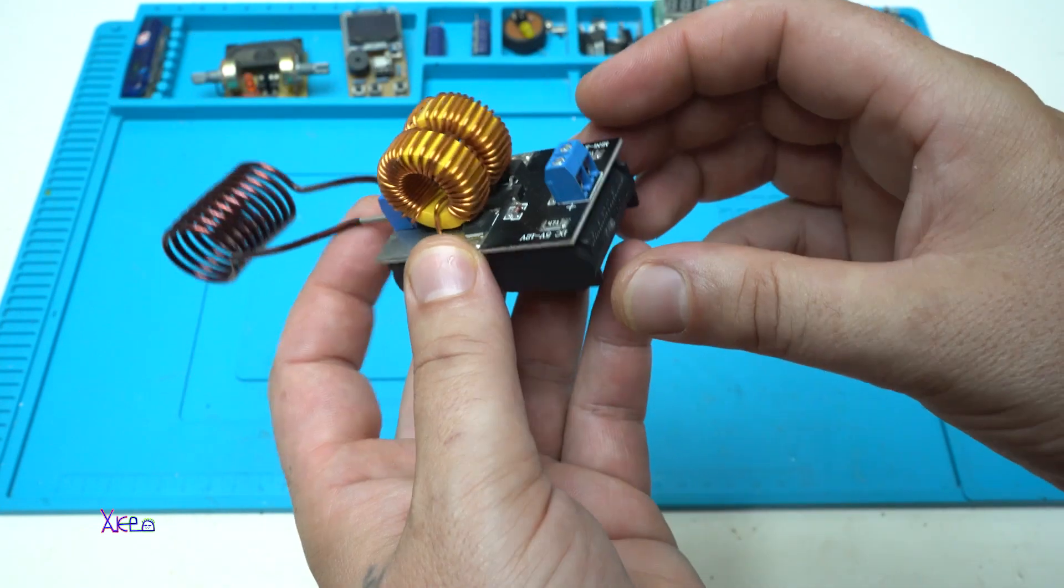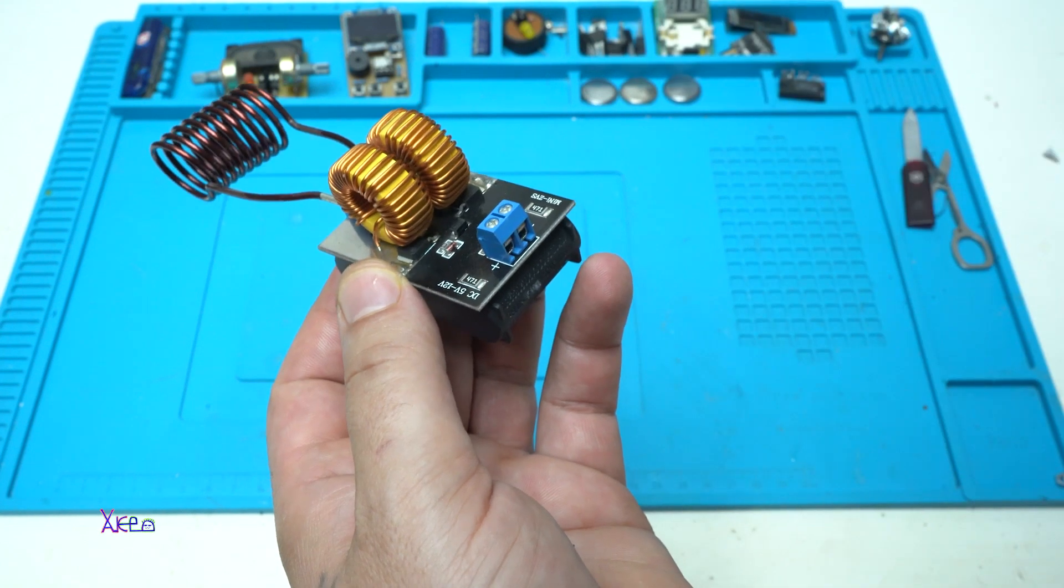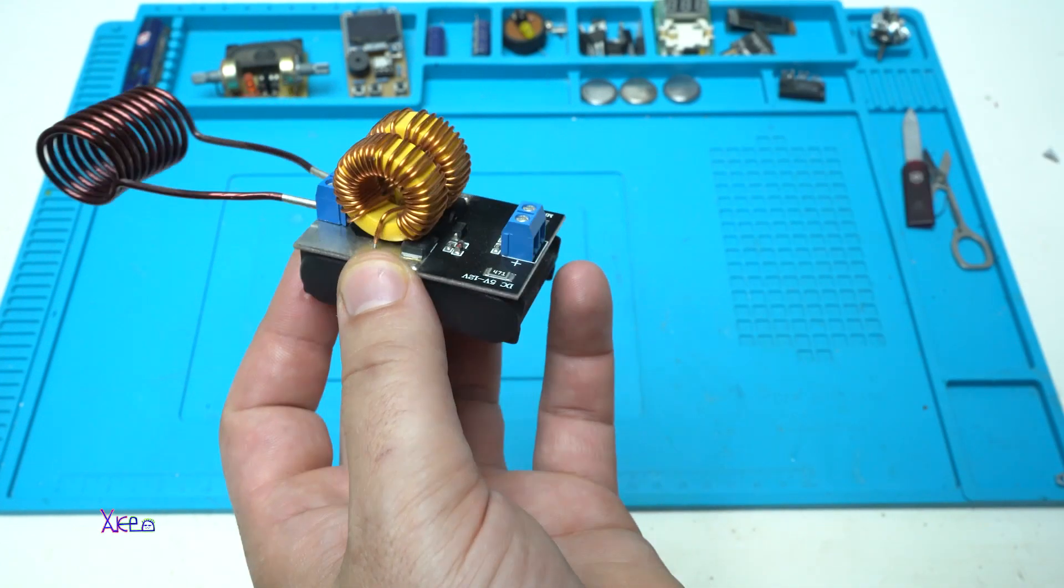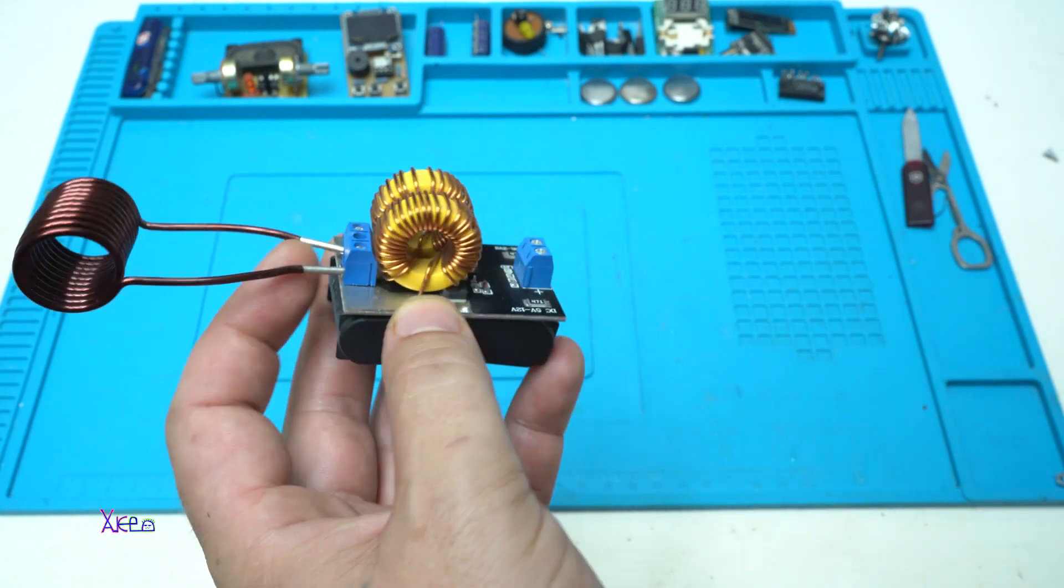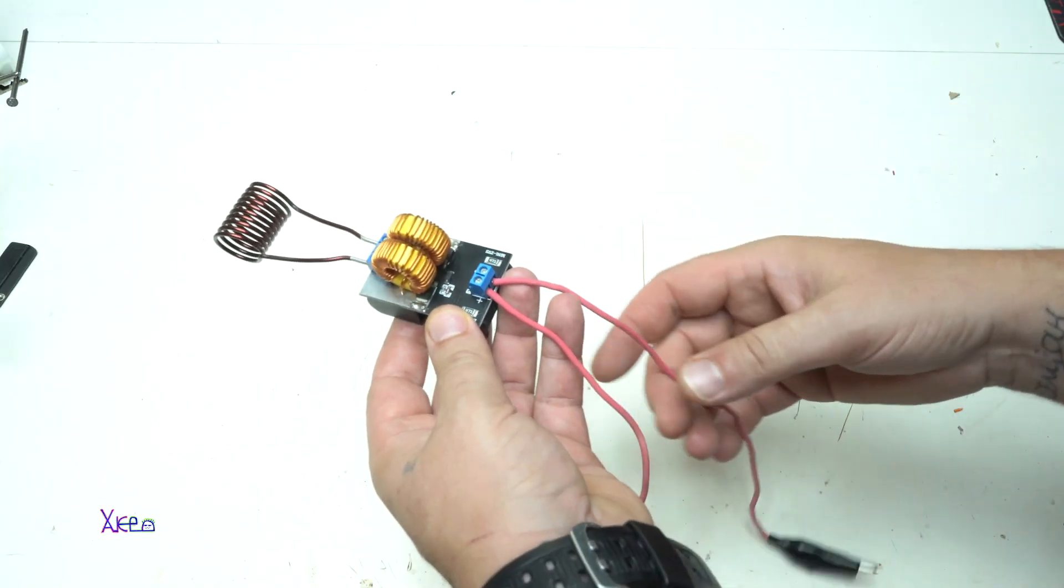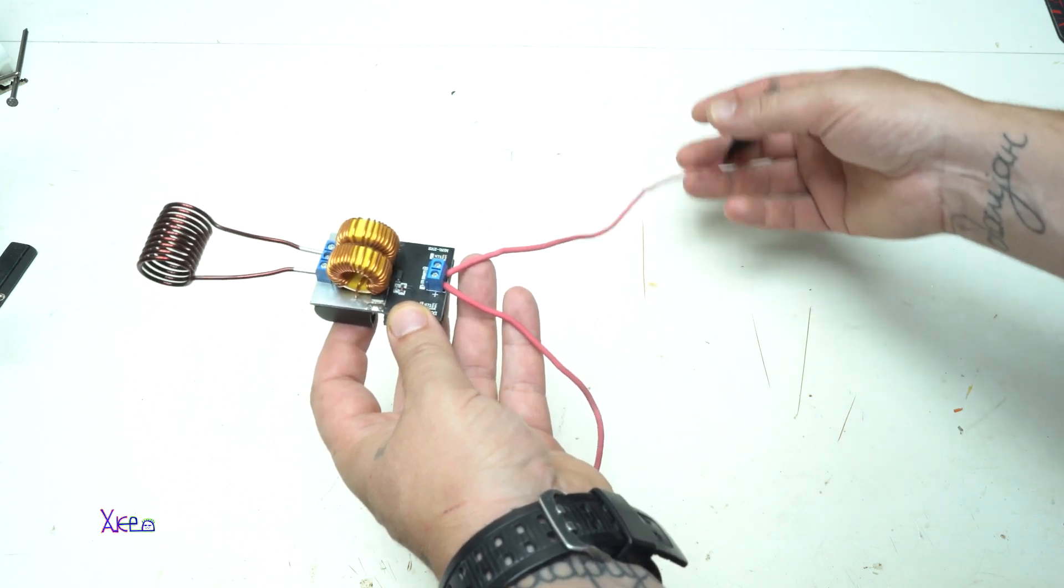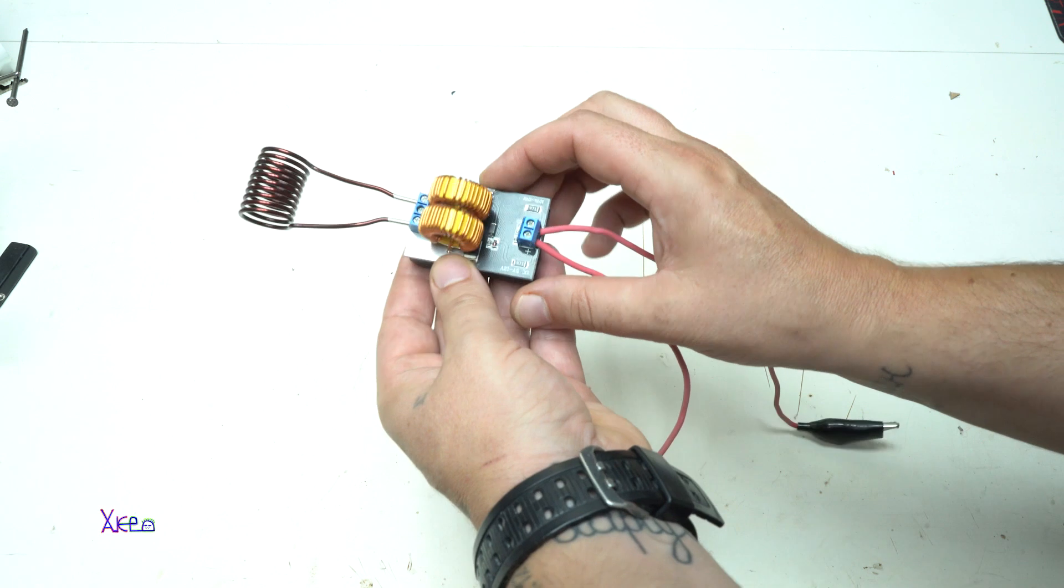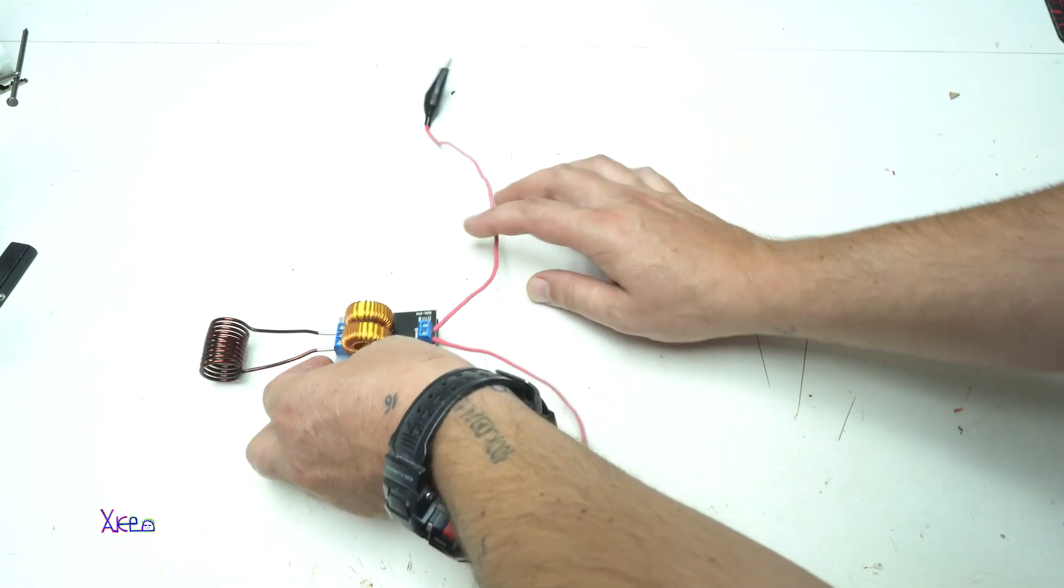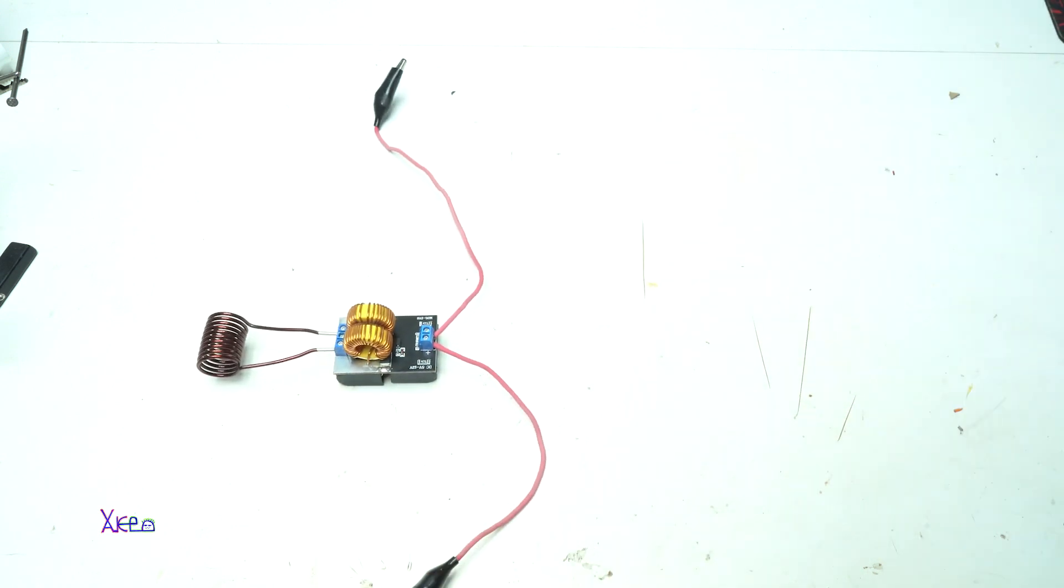Now I'm gonna hook up wires directly connected to the battery and try it. I have connected positive and negative wire to the induction heater. Now I need a big power supply. I'm gonna use a battery.